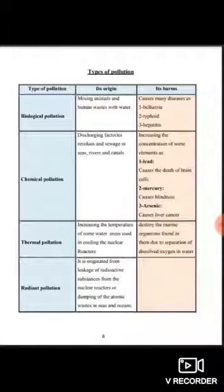Chemical pollution increases the concentration of some elements. Lead causes death of brain cells, mercury causes blindness, and arsenic causes liver cancer.